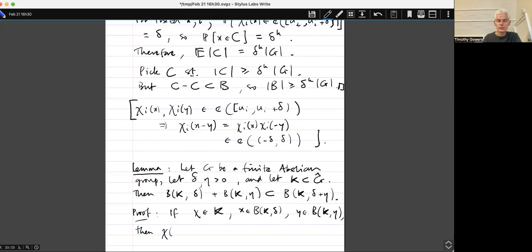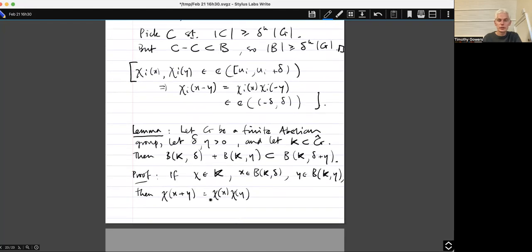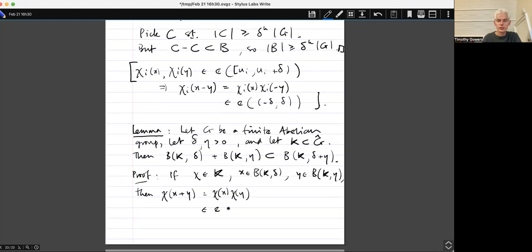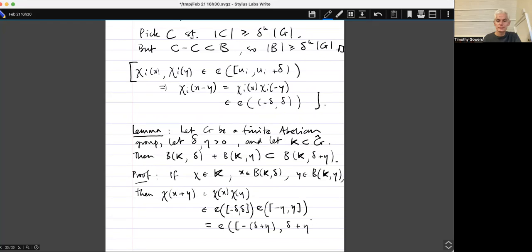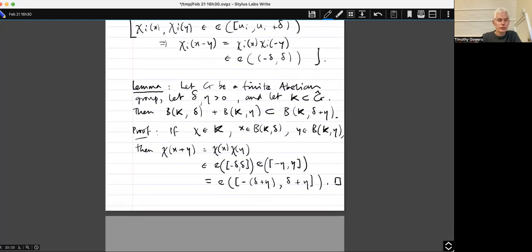Chi of X plus Y equals Chi X Chi of Y, which belongs to the interval, or the arc E of minus delta delta times E of minus Eta Eta, which is equal to E of minus delta plus Eta, delta plus Eta. So that one's straightforward.